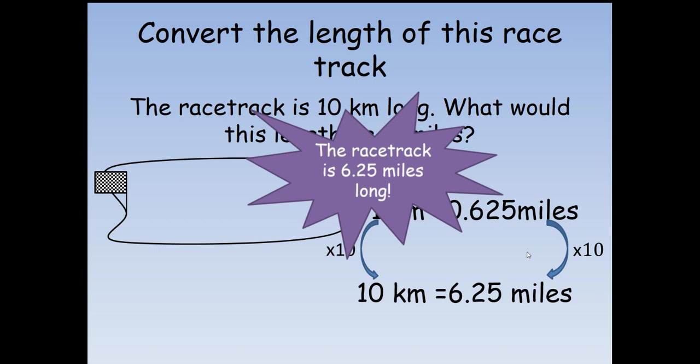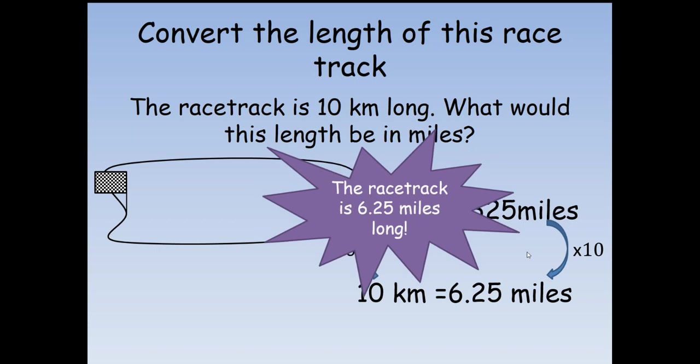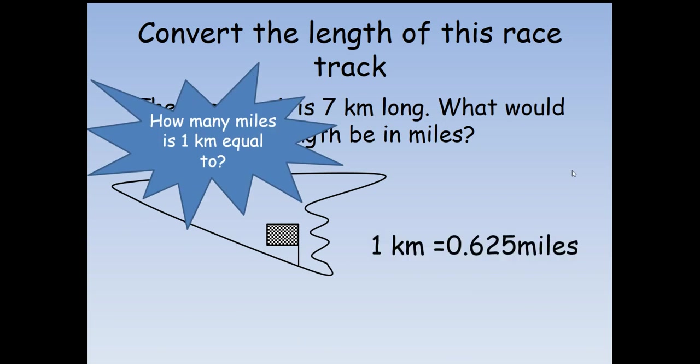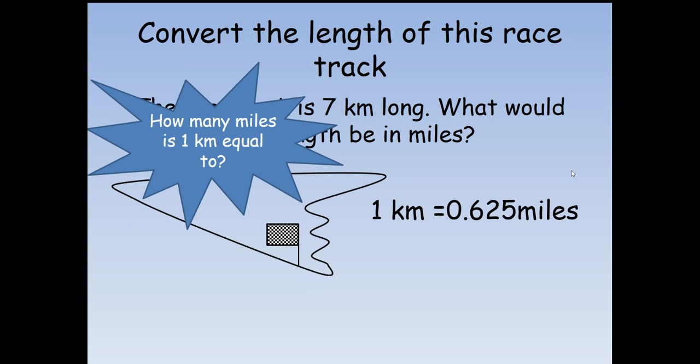Here's another one, so you try this one now in your book. The racetrack is seven kilometers long. What would it be in miles? Remember, one kilometer is 0.625 miles. In your book, pause the video and see if you can work out what the seven kilometer track would be in miles.